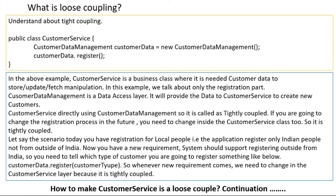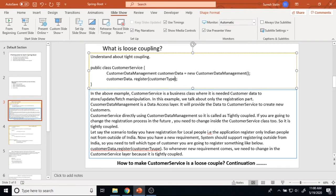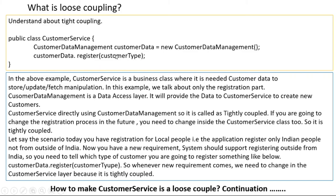Let's say there is a new requirement from the client: they want to register two types of customers. As of now we are registering customers from India only, but now we also want to register customers from outside India. So I want to change my register method. Currently the register method does not have any parameter, so I am deciding to add one more argument inside the register method — which is customer type.